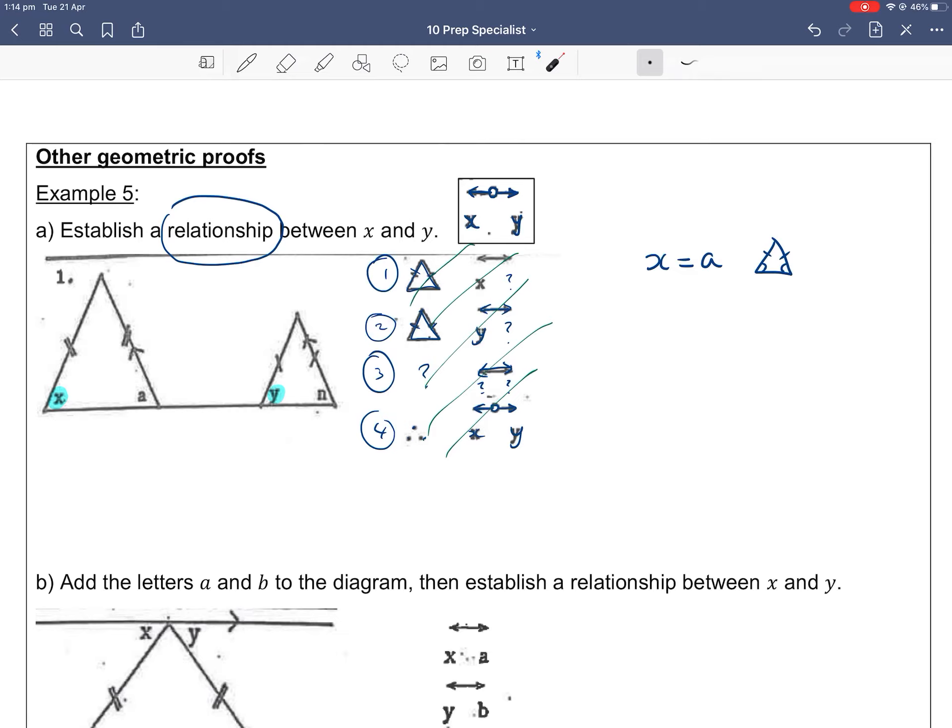Next, step two. Look at the triangle involving y, so the triangle on the right hand side. Again you can see it's an isosceles triangle because on the two sides they've got the dashes there. So those dashes indicate those two sides are the same, which means it's an isosceles triangle. So that tells us that y must be equal to n, because angles at the bottom of the corners of the isosceles triangles are the same.